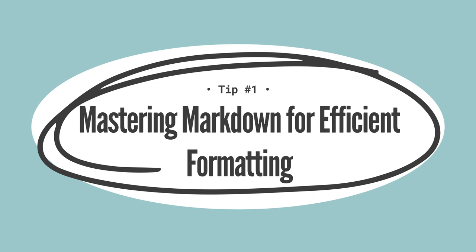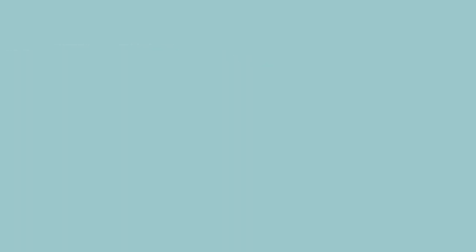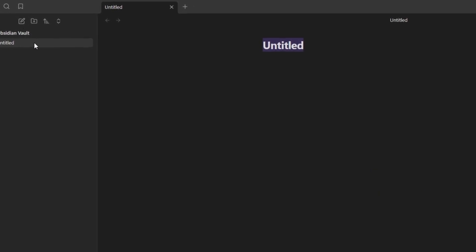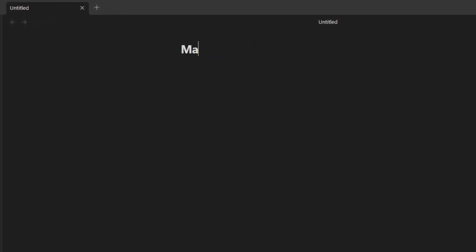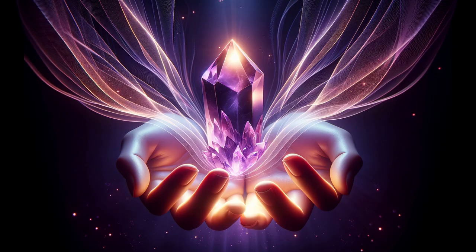Tip number one: mastering Markdown for efficient formatting. Markdown is a lightweight markup language with plain text formatting syntax. It's designed so that it can be converted to HTML and many other formats using a simple text editor. And the best part? Obsidian supports Markdown natively, making your note-taking process not just faster but also more organized and visually appealing.